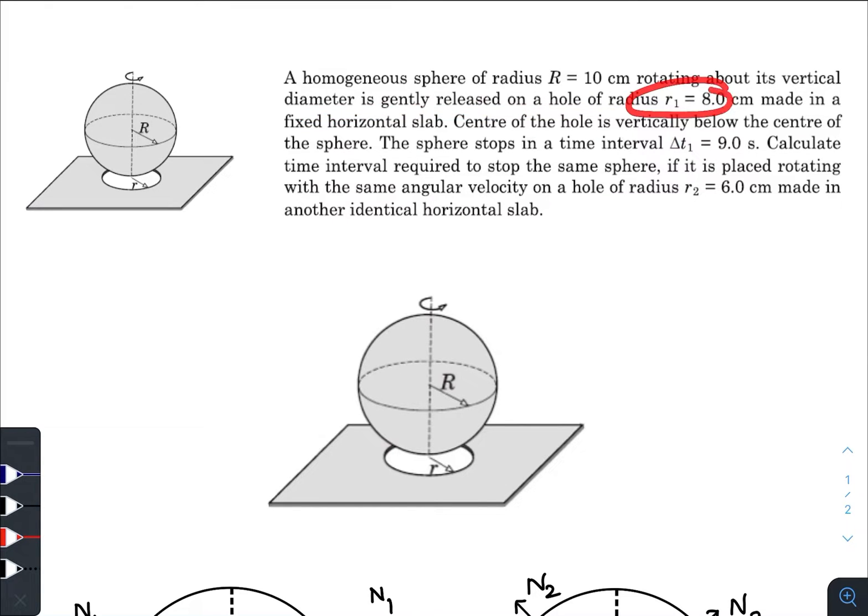The hole is made in a fixed horizontal slab, so this slab is not moving. Center of the hole is vertically below the center of the sphere.